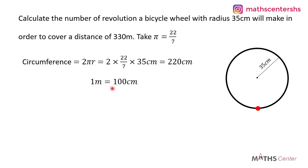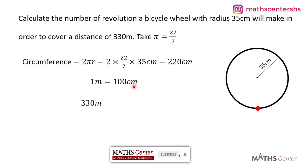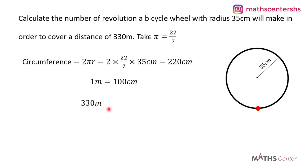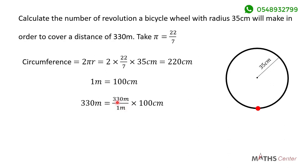To convert, we use the fact that one meter equals 100 centimeters. So 330 meters equals 330 × 100 centimeters, which gives us 33,000 centimeters.